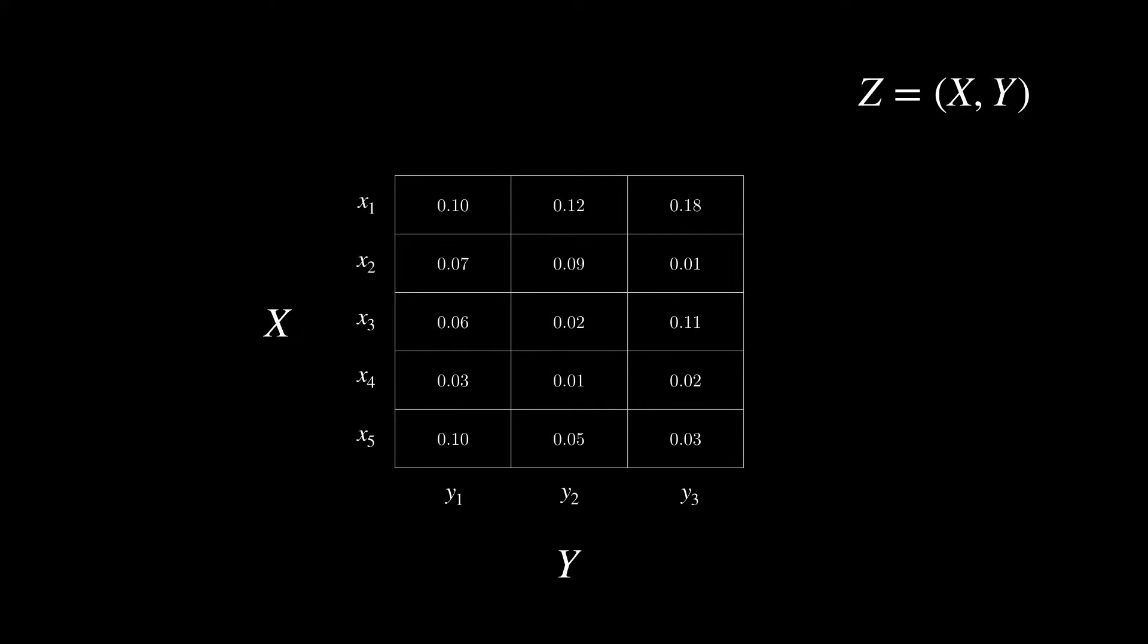So, here there would be 15 possible states. Our constraints from before still apply, and the sum of all the probabilities must still equal 1.